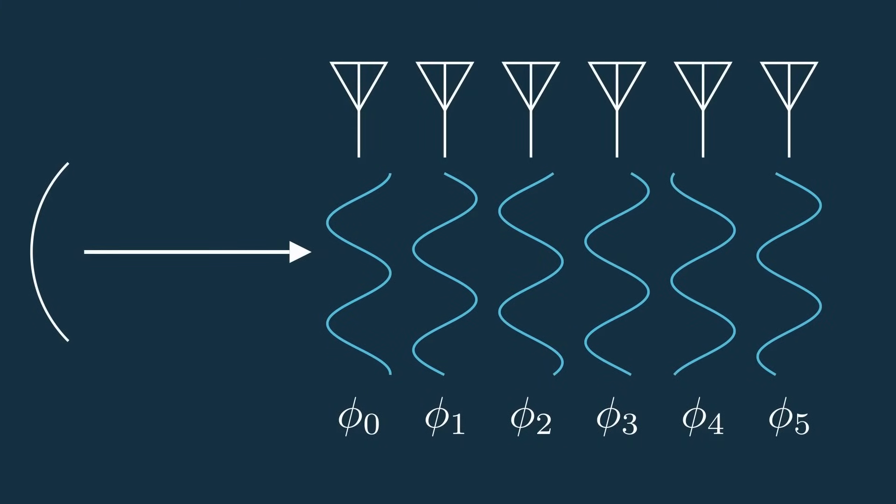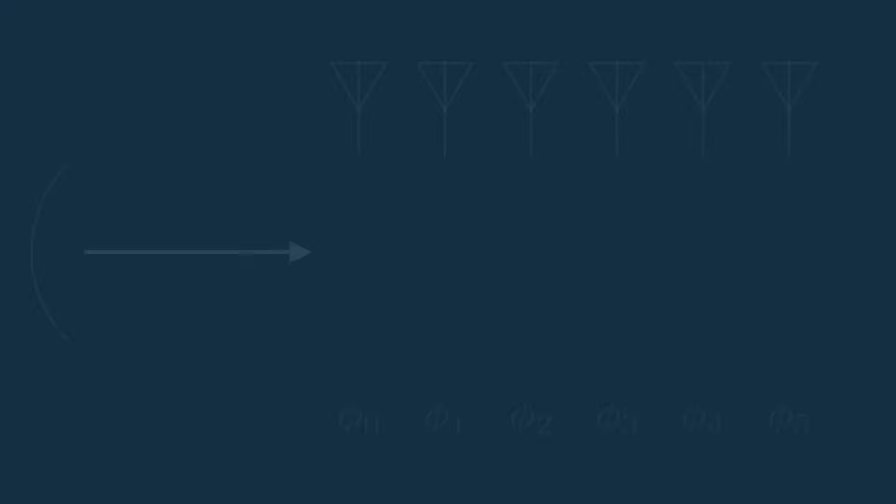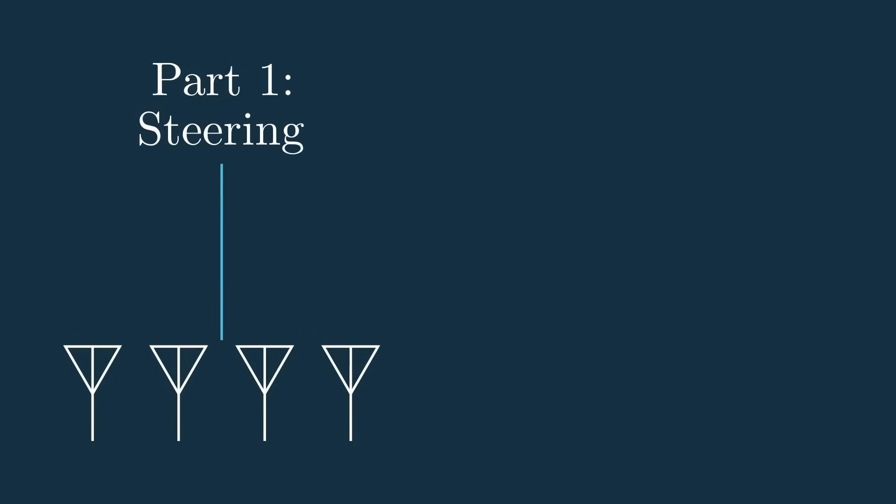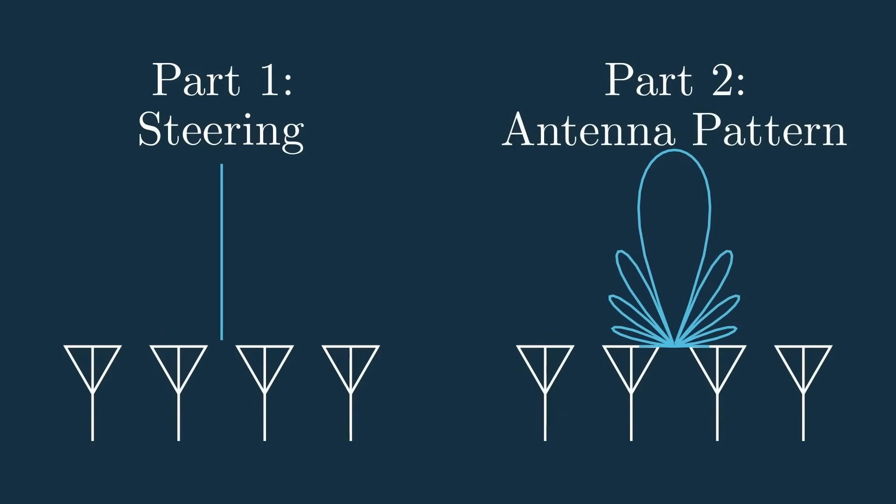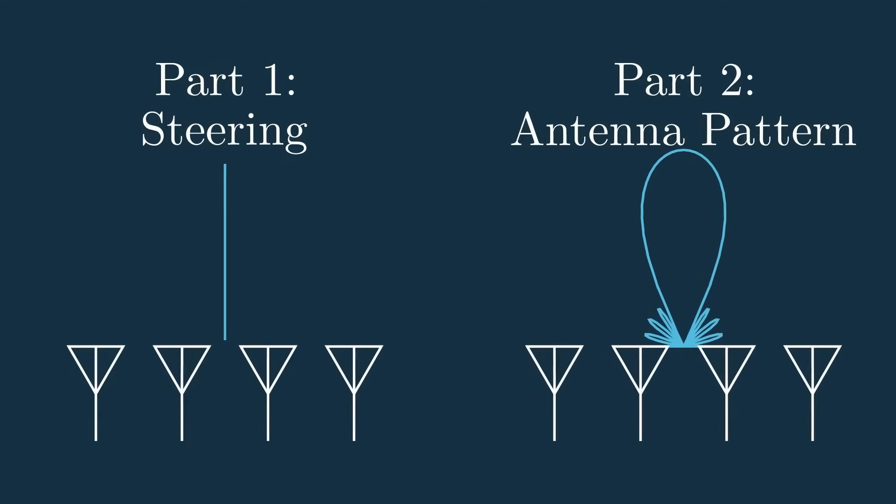This video will be separated into two sections, steering and the antenna pattern. And there's chapters to skip between the two if you want. In the first section, I'll show how and why we would steer an antenna array. And in the second section, we'll learn how to calculate this beam shape for both 1-dimensional and 2-dimensional arrays. And this will help us lay the foundation for understanding how you can modify the shape to fit your needs. Let's start with how to steer a phased array.